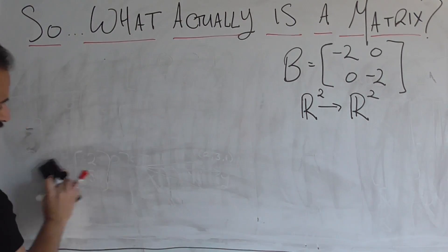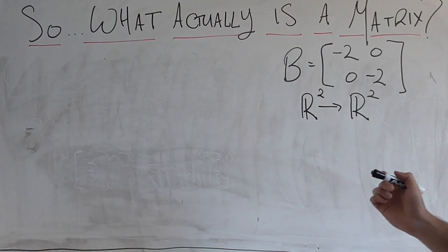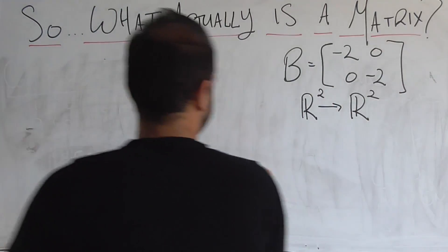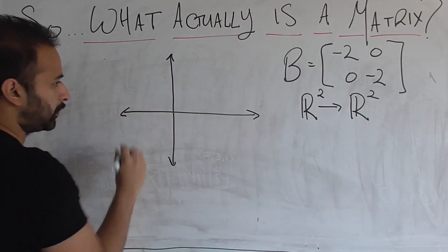Now let's close the video by looking at the type of linear transformation that's done by this other matrix here, B. So again, let's draw a picture. Let's say we have our coordinate axes.